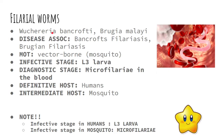Filarial worms: the two main characters are Wuchereria bancrofti, the Bancroft's filarial worm, and Brugia malayi, the Malayan filarial worm. The associated diseases are Bancroftian filariasis for Wuchereria and Brugian filariasis for Brugia malayi. Their mode of transmission is vector-borne or through mosquito. The infective stage is the L3 larva or filariform larva.